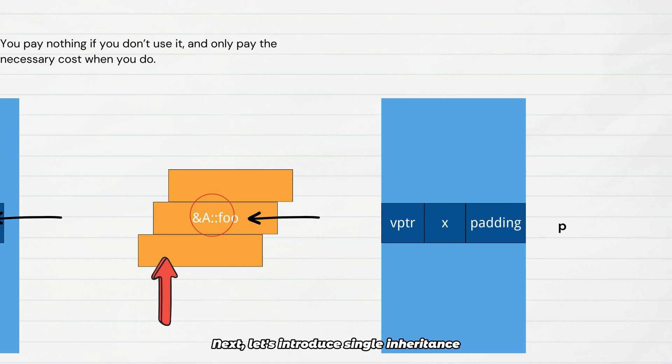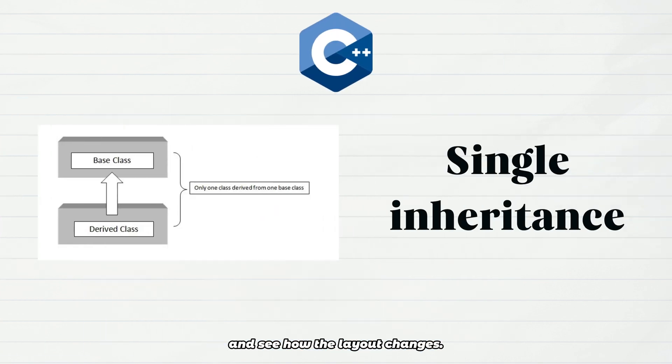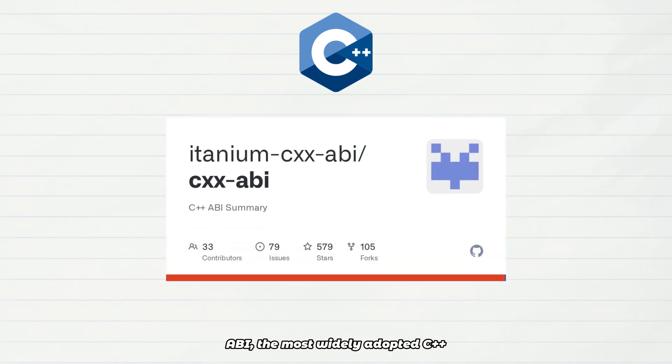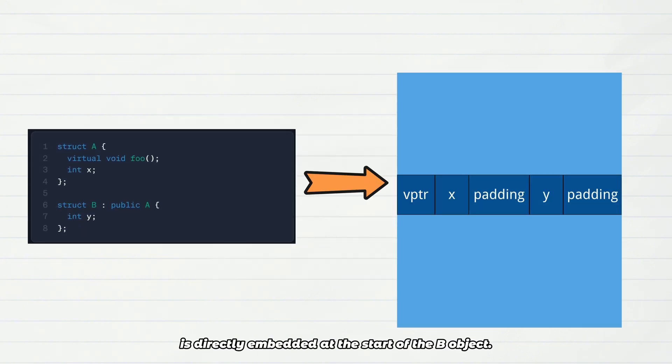Next, let's introduce single inheritance and see how the layout changes. Under the Itanium C++ ABI, the most widely adopted C++ ABI standard followed by GCC and Clang, the memory layout of class B looks like this: the base class A's sub-object is directly embedded at the start of the B object.